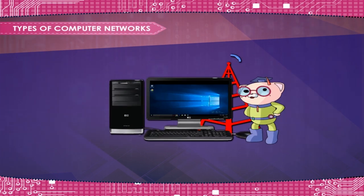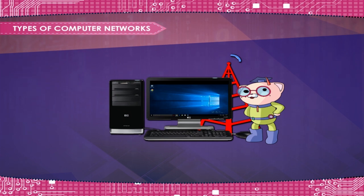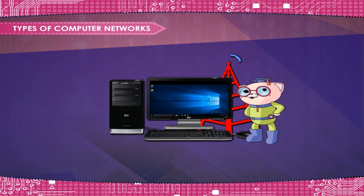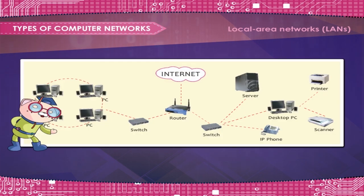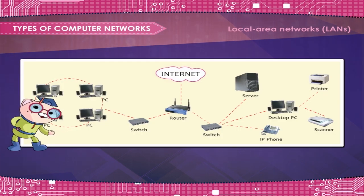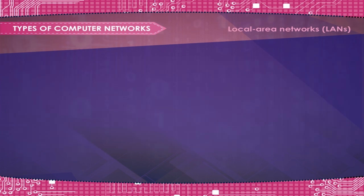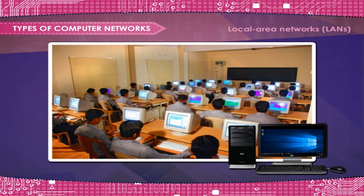Types of computer networks: Local area networks, or LANs — the computers are geographically close together, like connected in the same building. For example, a network in your computer lab.